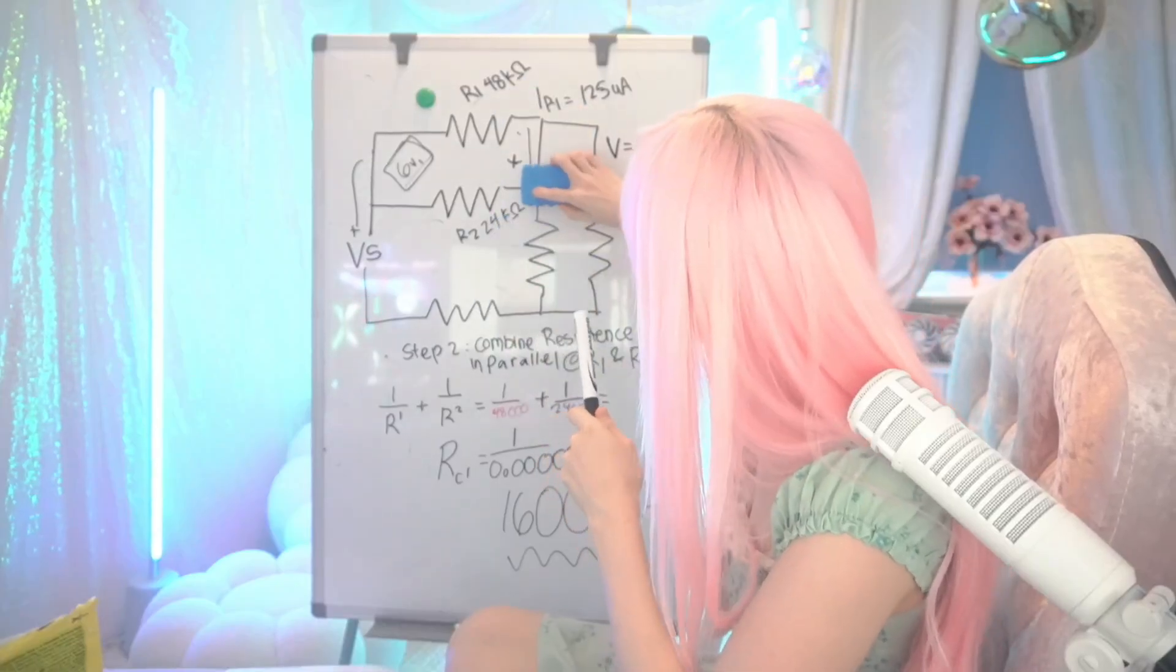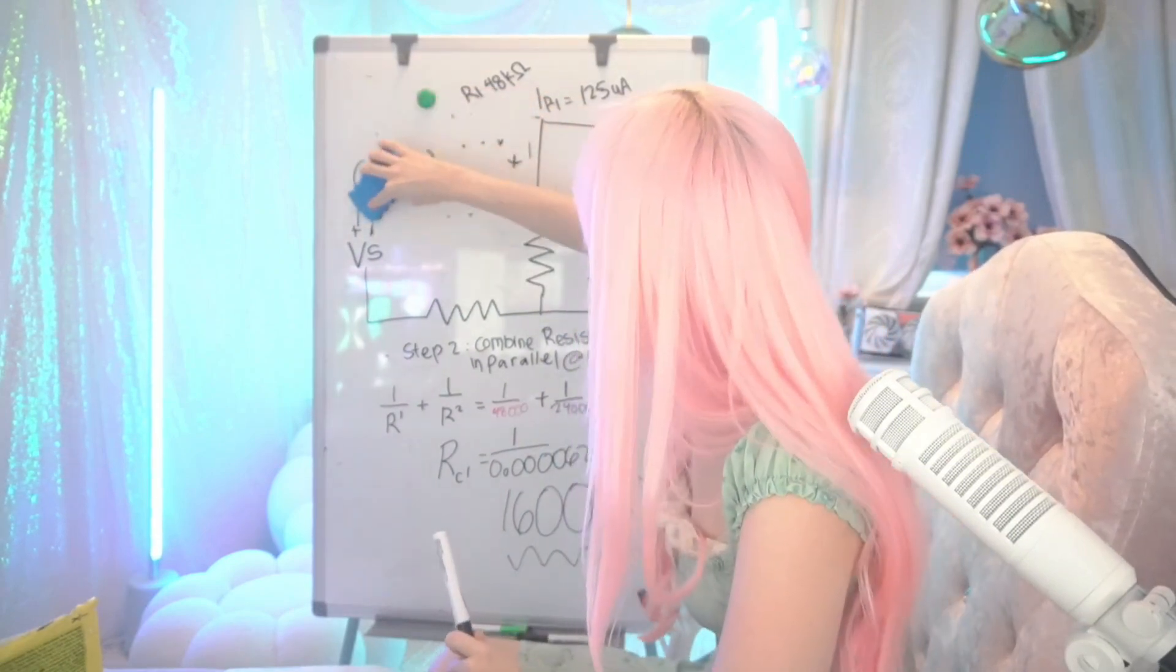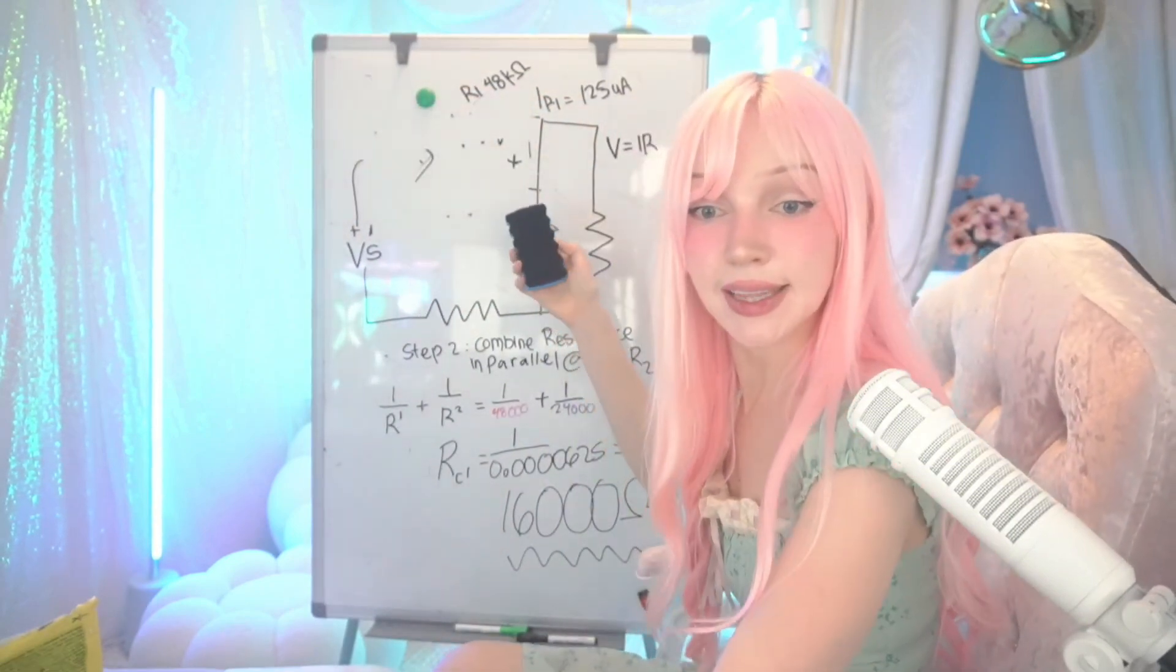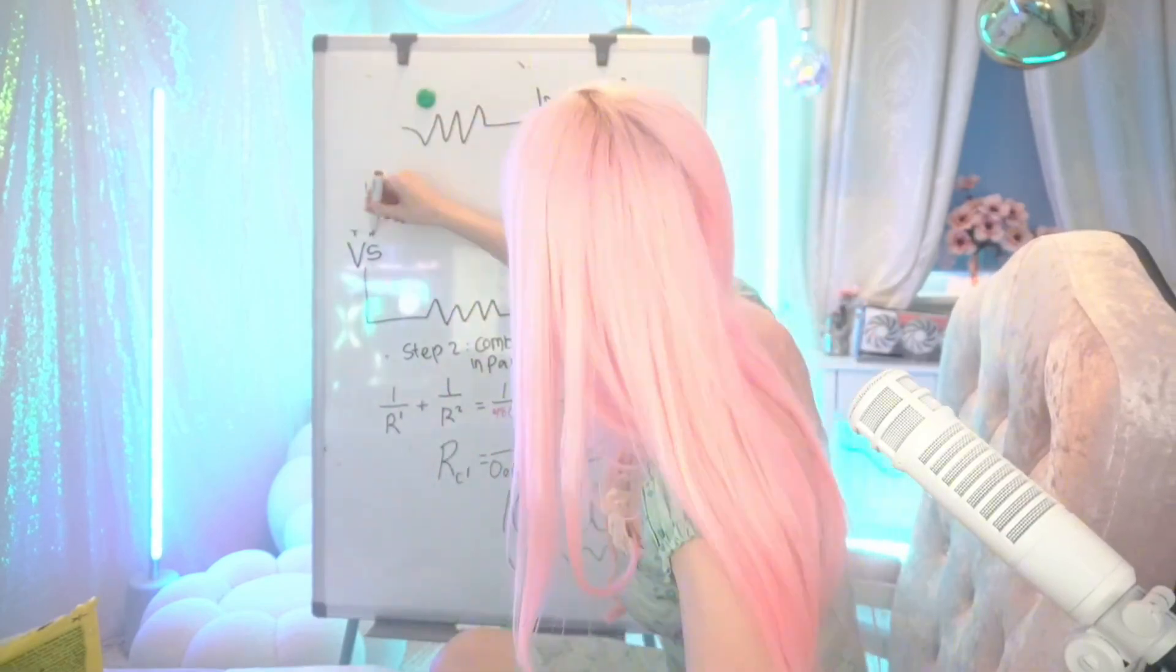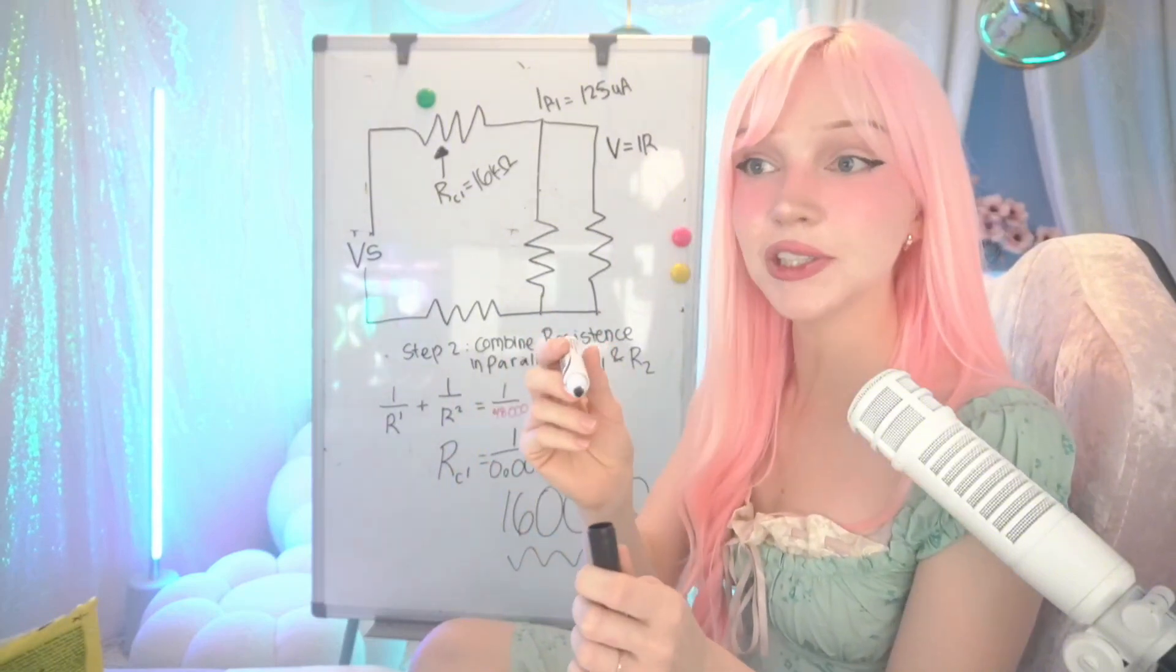We can take this and we can take this and we can get rid of them. And we're going to combine it into one resistor, which is going to be 16,000 ohms. Right here, 16 kilo ohms. Now we have one part of our equation done.